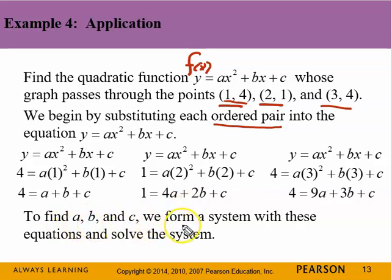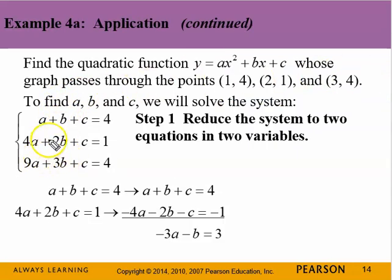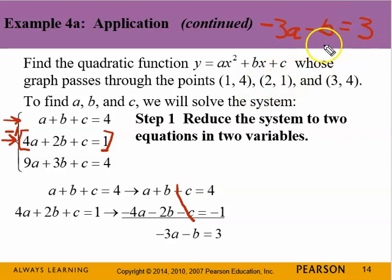Now, to find A, B, and C, we form a system of these equations to solve the system. We'll see that in the next slide. Now, we set them up. And notice that if we use this first and second equation, if we were to multiply this equation here by a negative 1 that would reverse all these signs, and the letter C's would cancel out. And we'd end up then with a negative 3A minus B equals 3. So, we have a negative 3A minus B equals 3. We have an equation now with just two variables.